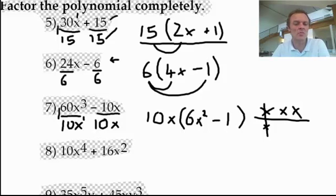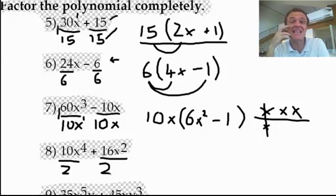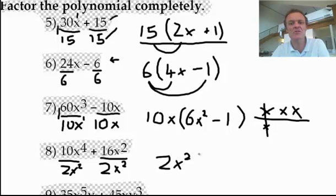Let's do one more. What will these two divide by, 10 and 16? 2, so they'll both divide by 2. And again, the smallest x is the x squared. So I know they'll both divide by the x squared. So 2x squared is what I'm going to write here. 2x squared is what I can factor out of both of these. Open it up.